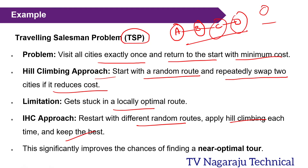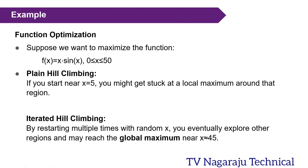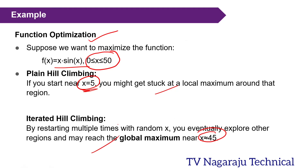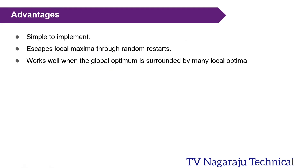Another example is function optimization. Consider the function f(x) = x·sin(x) with x between 0 and 50. In the general scenario, if you start at x = 5 you may get stuck at a local maximum at that point. But if you repeat the process multiple times with different starting points, approximately at x = 45 you can reach the global maximum. That is the intention: repeat multiple times and at one iteration you get the best solution.